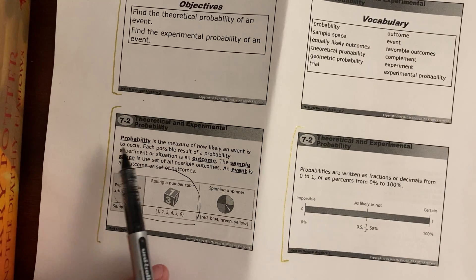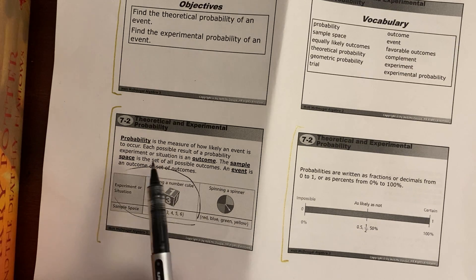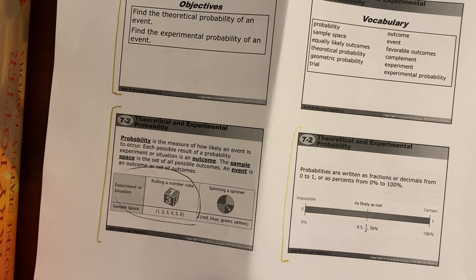Probability is the measure of how likely an event is to occur. Each possible result of a probability experiment or situation is an outcome. The sample space is the set of all possible outcomes. An event is an outcome or set of outcomes.